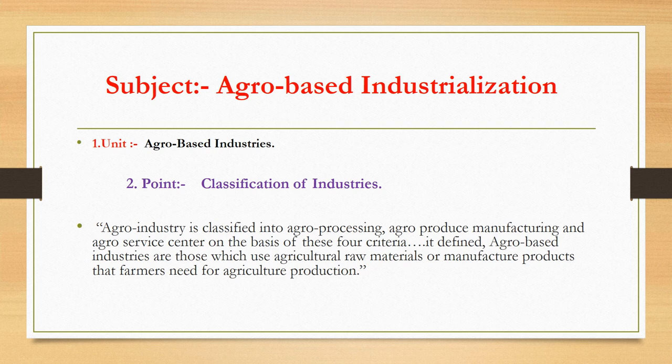Industrial clusters occur when many industries are located close to each other and share the benefits of that closeness. Major industrial clusters in India include the Mundra-Pali cluster, Bangalore-Karnataka region, Kutch region, Ahmedabad-Baroda region, Visakhapatnam industrial belt, Guntur belt, Delhi-Meerut region, Kolhapur, and Tirupati-Anantapur industrial cluster.